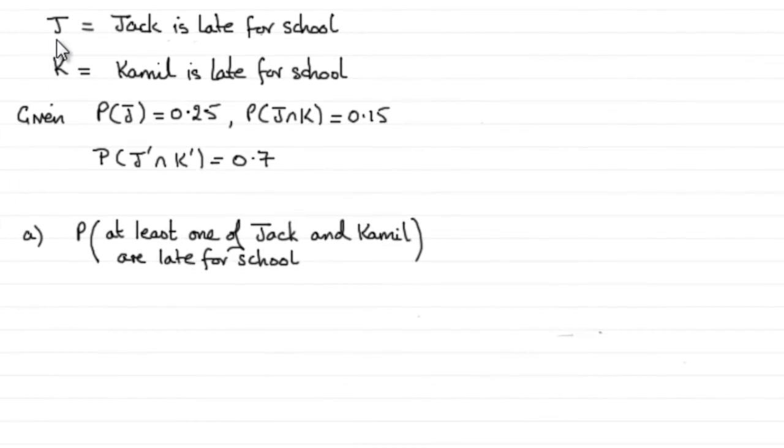Now just to recap, we're given these two events J and K. J being that Jack is late for school and K is Kamal is late for school. And also we've got these summary probabilities. And the first question, we've got to work out the probability that at least one of Jack and Kamal are late for school.